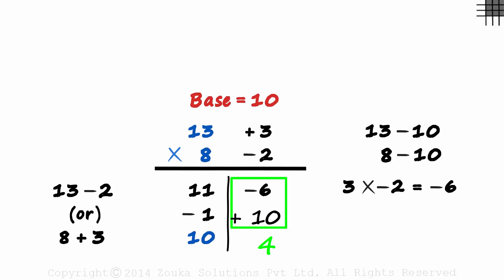But wait! Before writing 4, we should check the number of digits that are allowed on the right. As the number of 0s in the base is 1, the number of digits on the right will also be 1. So we write a 4 here. That's our answer! One hundred and 4!